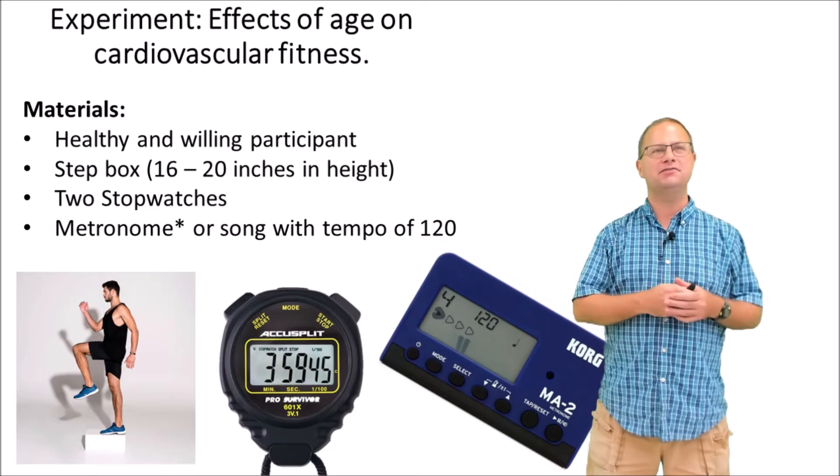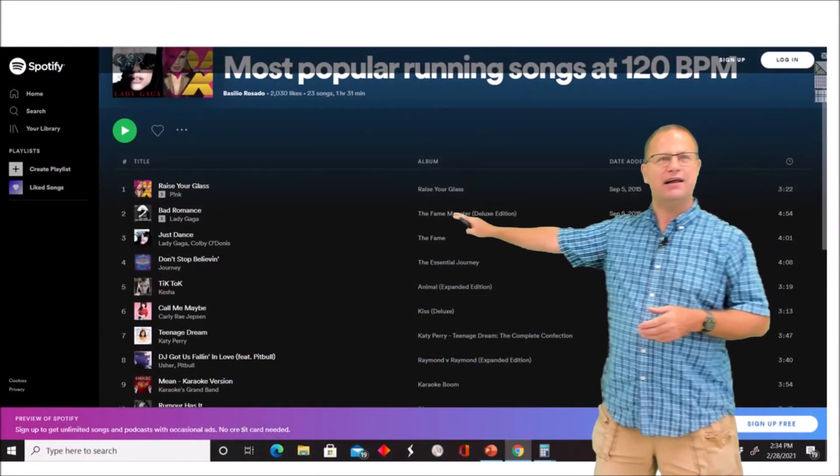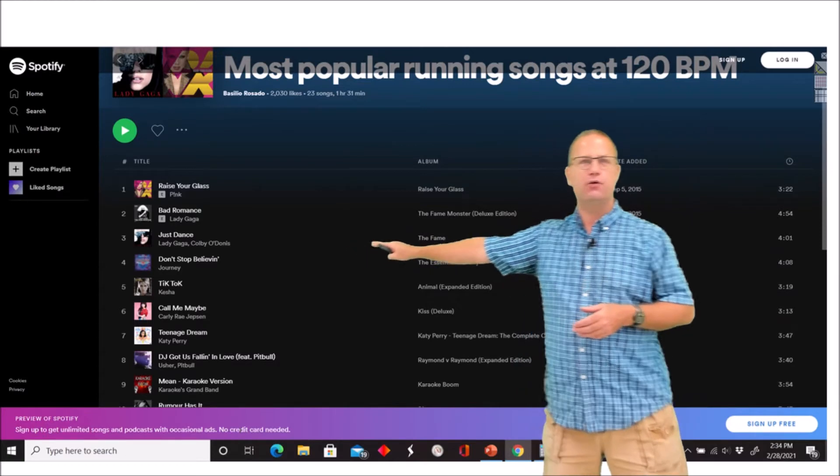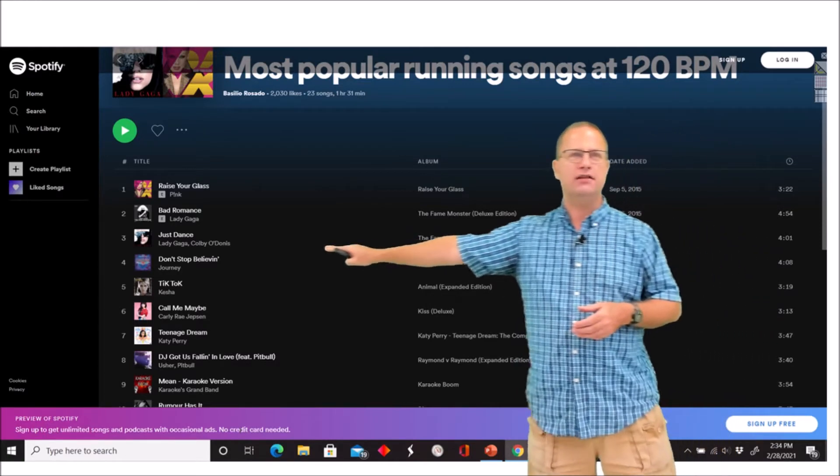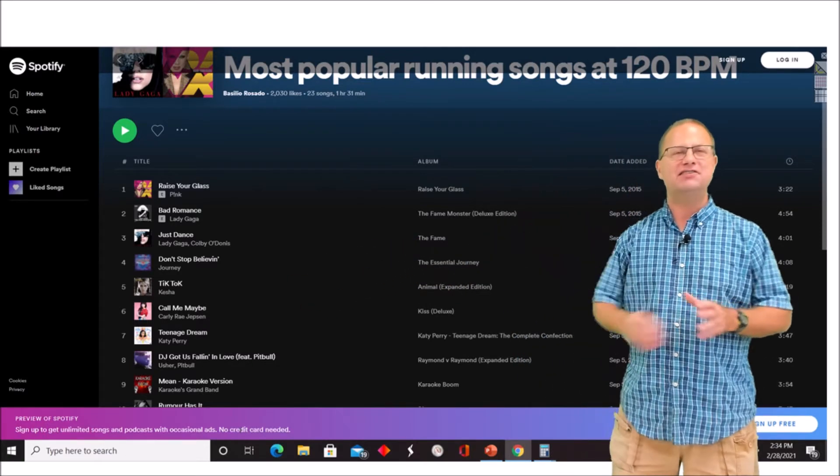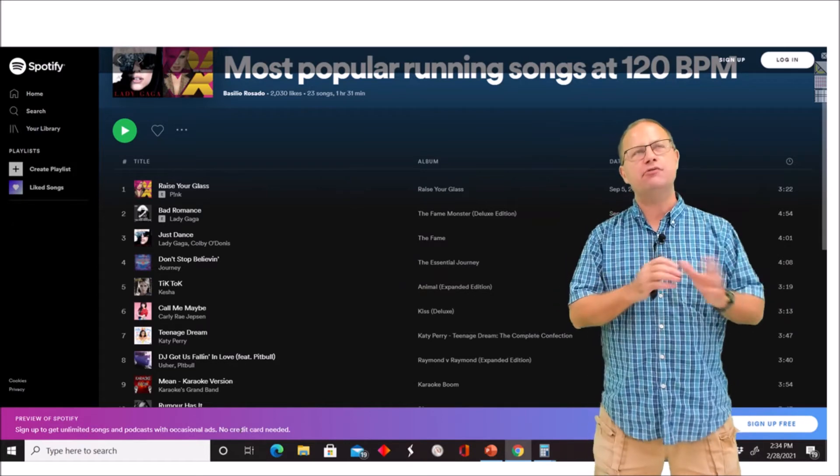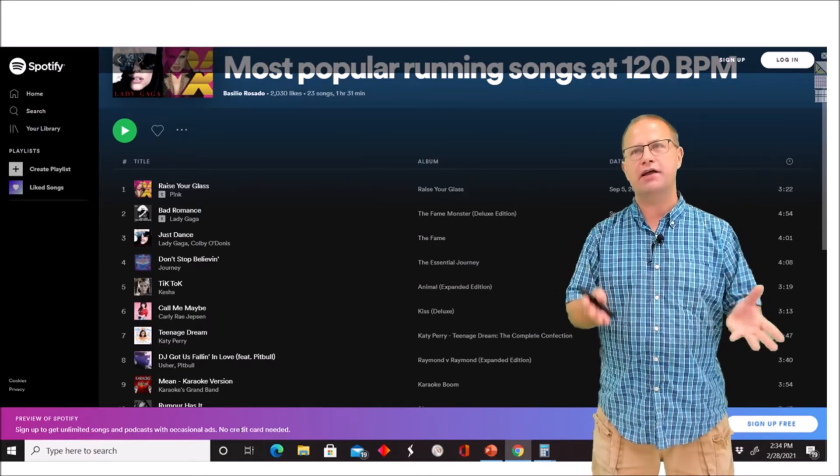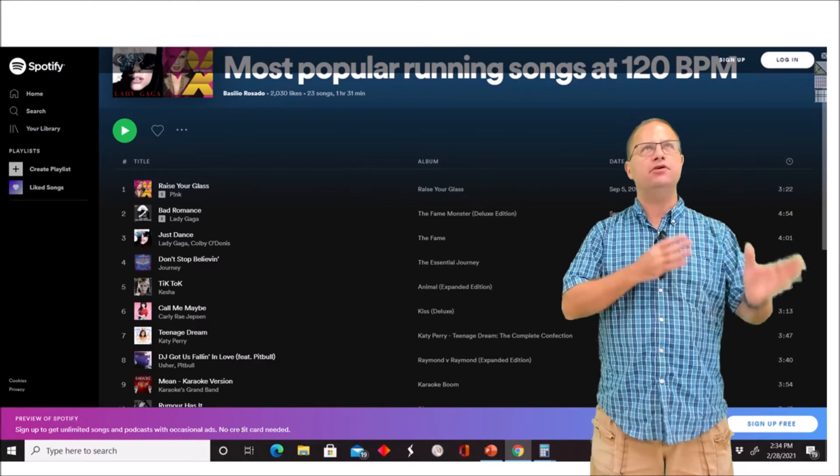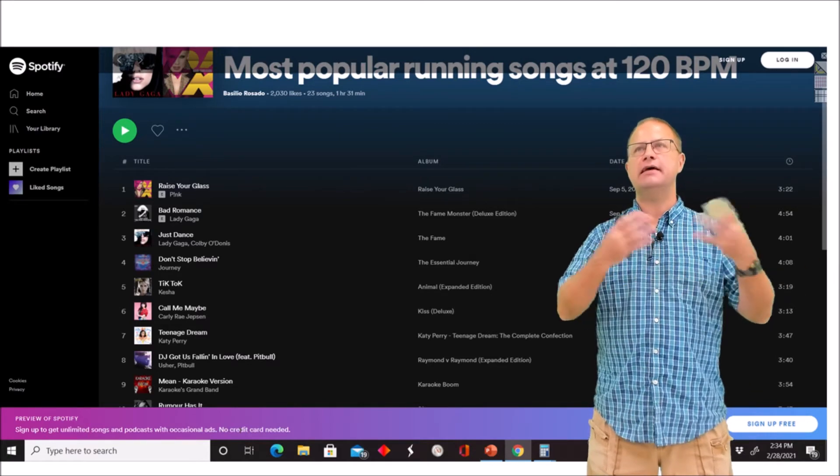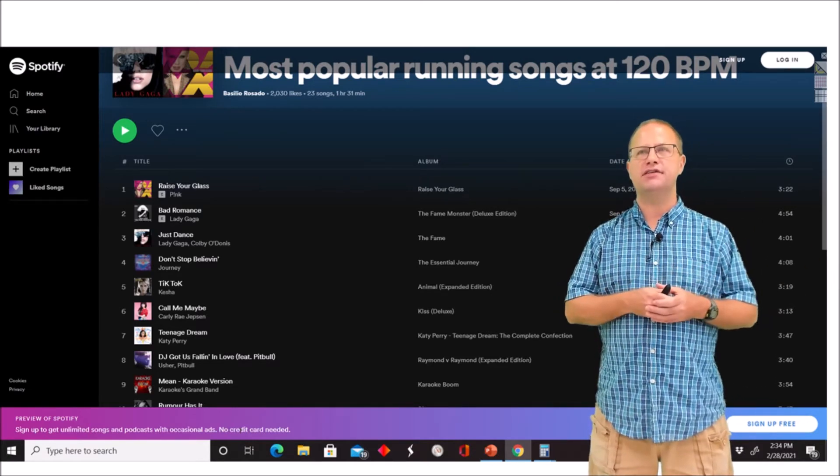Where can you find those songs? Well, simply Google it, and here you can see we've got a lot of Lady Gaga songs that are around 120 beats per minute, as well as some Journey songs. You can probably find something you like. Obviously it would be great if these songs had a duration greater than five minutes so you don't have to reset them. But these can help you walk at the appropriate tempo for the Harvard step test.